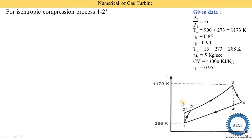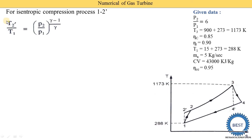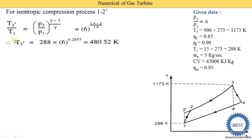First we find T2' (isentropic compression temperature) using: T2'/T1 = (P2/P1)^((γ−1)/γ). Substituting P2/P1 = 6, γ = 1.4, T1 = 288 K, the exponent simplifies to 0.2857. Therefore T2' = 288 × 6^0.2857 = 480.52 K.